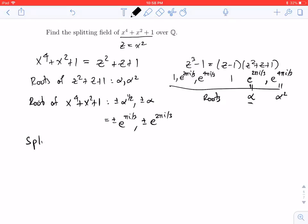Now if we want the splitting field of x to the 4th plus x squared plus 1 over Q, I'm going to take Q and adjoin these roots. When you have plus or minus, you really only need to put one of them. So I'll adjoin the plus versions of these roots.